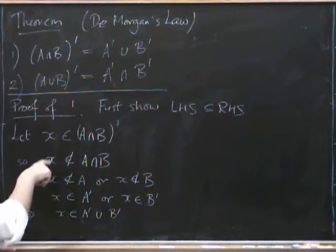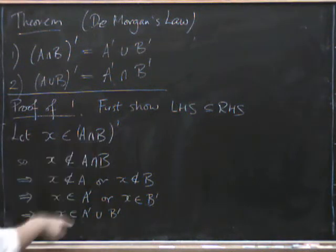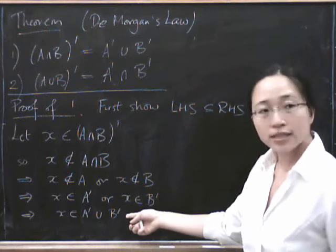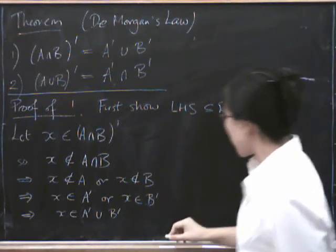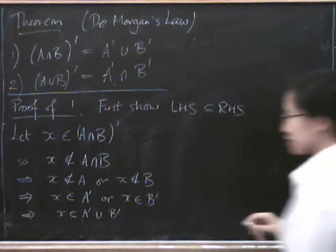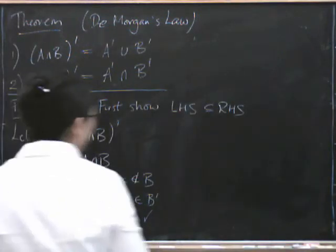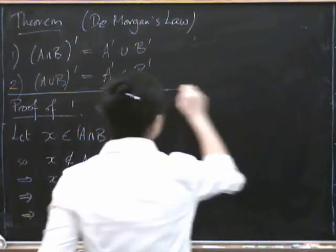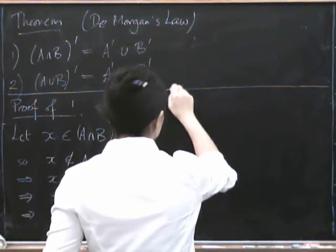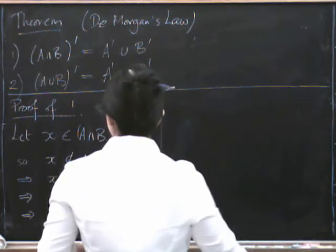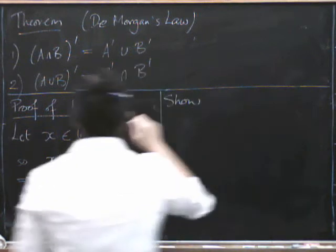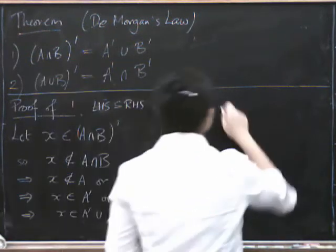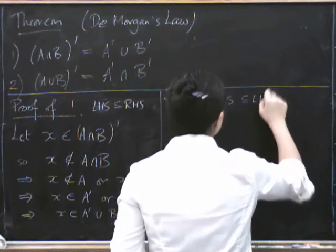So we've deduced that if X is in the left-hand side, then X is certainly in the right-hand side. So that shows that the left-hand side is completely contained in the right-hand side. Now let me see if I can fit the other half on this side. Let's now draw a line down the middle and show that the right-hand side is completely contained in the left-hand side.